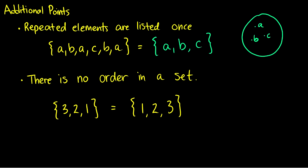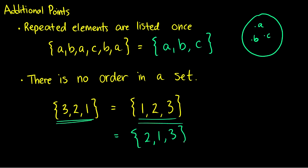There's also no order in a set, and in a diagram this is easy to see because there's no order in a circular diagram. Essentially the set {3, 2, 1} is the same thing as the set {1, 2, 3}, and that's also the same as the set {2, 1, 3} — so on and so forth. There's no order to these sets.